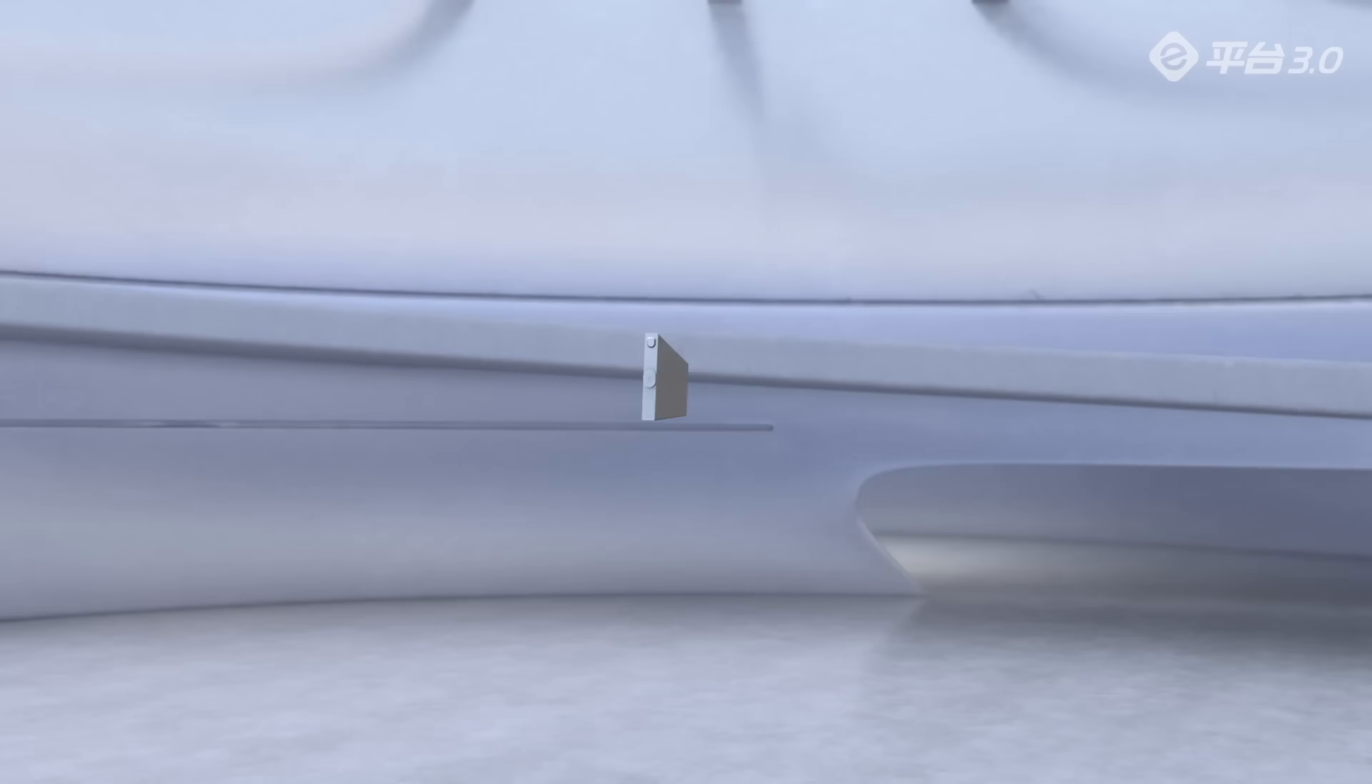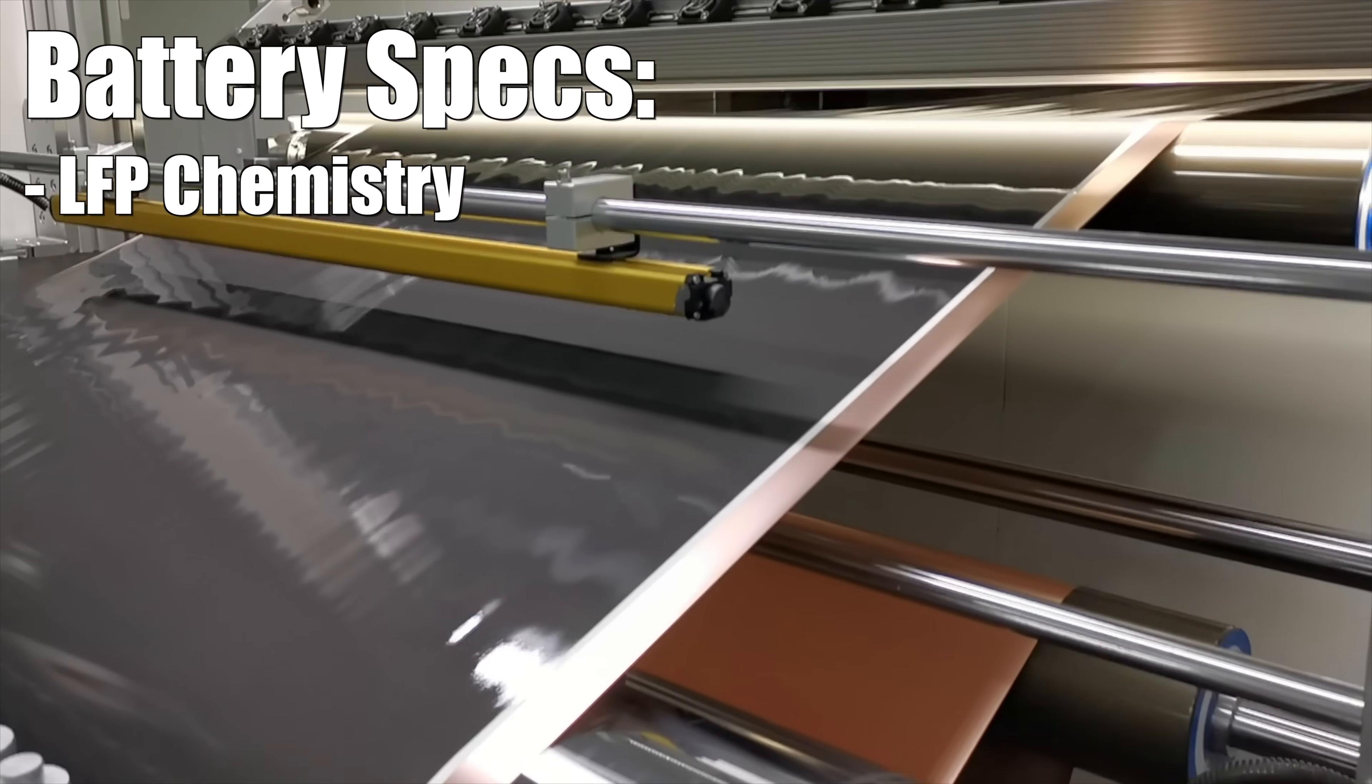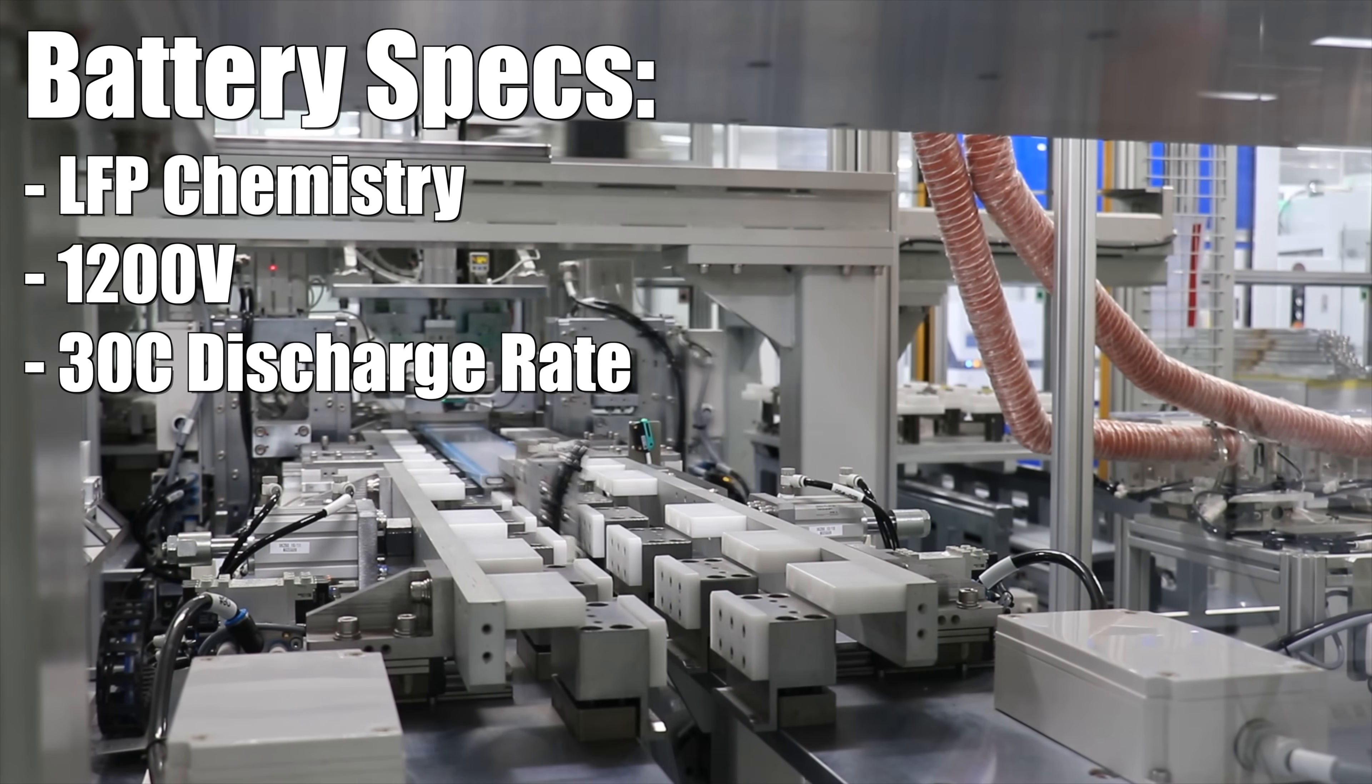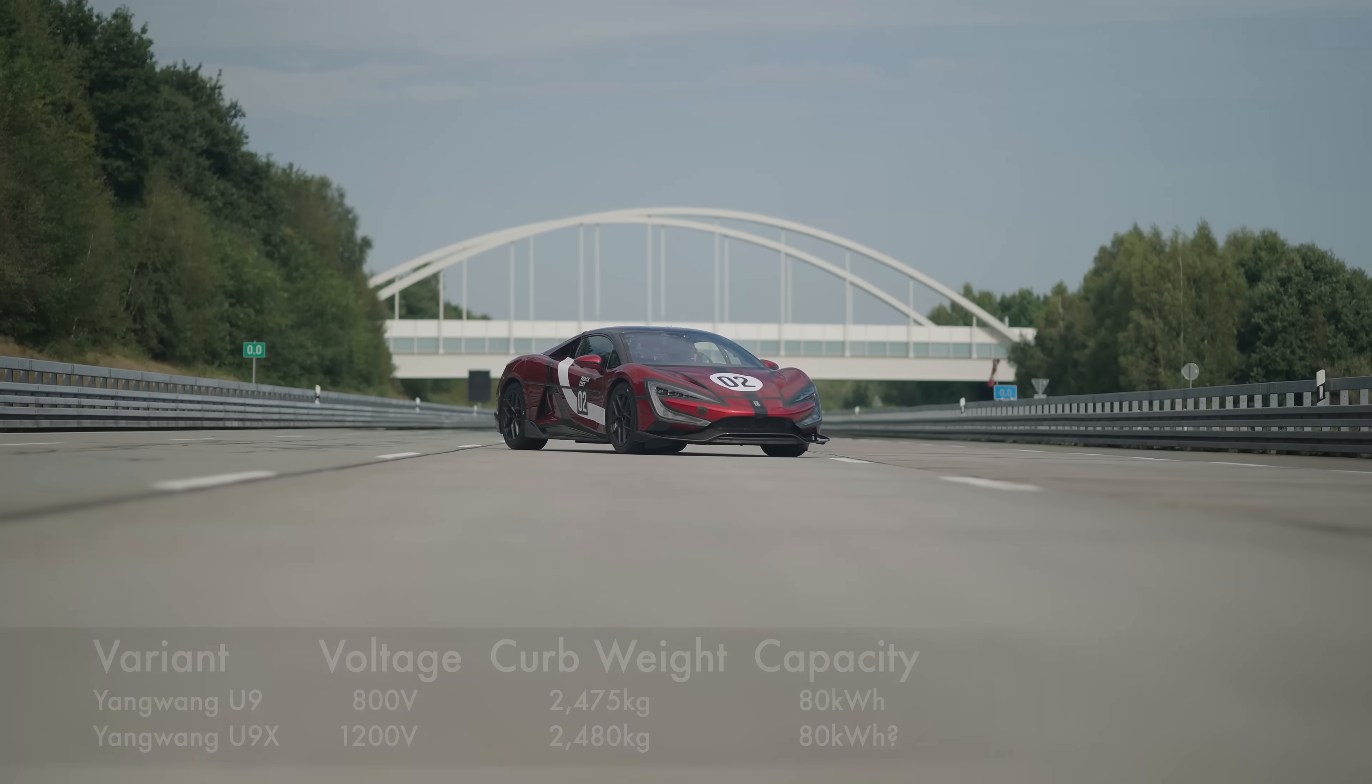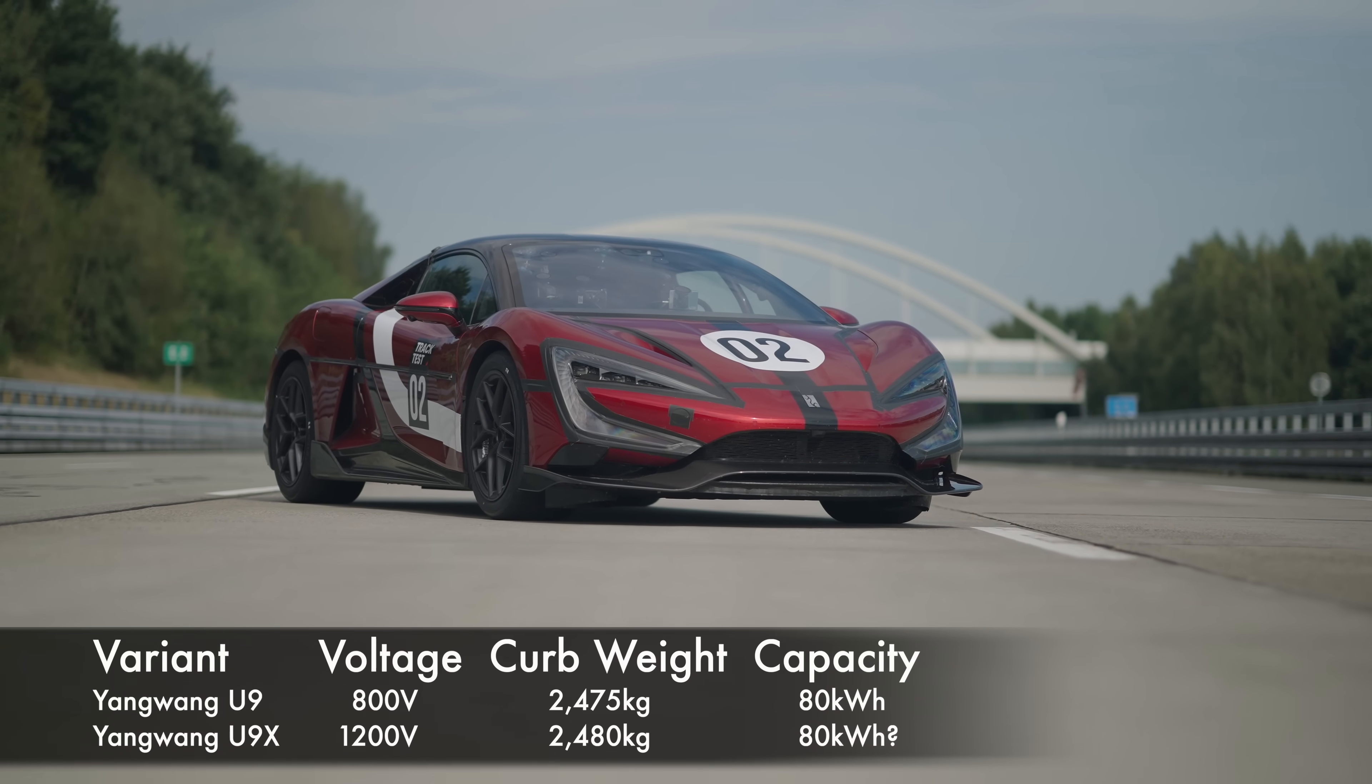Now on top of the crazy motors and the crazy power, there is of course a crazy battery, and unlike its supercar counterparts, it's actually using an LFP or lithium iron phosphate chemistry, and it's rated at 1200 volts and capable of a 30 C discharge rate. Now by the sounds of it, this is about an 80 kilowatt hour battery pack, which is the same size as the other U9 variants. Of course now it's at a higher voltage, and that 80 kilowatt hour number isn't confirmed, but it is probable considering the vehicles weigh nearly exactly the same, and the math lines up.